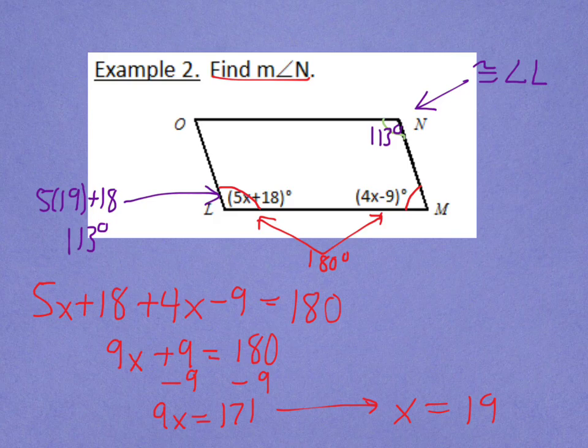I can check by plugging into angle m, which would come out to be 67 degrees. This verifies that I did my equation correctly because 113 and 67 do add up to 180 degrees. And similarly, angle o is 67. So, there's a couple of example problems for you. We'll look at some more during class. See you guys later.